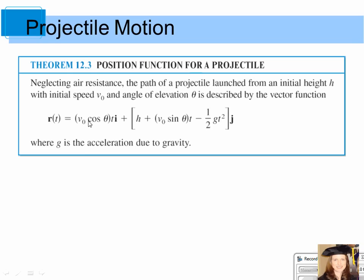R of t equals v sub 0 cosine theta times t times i, plus h plus v sub 0 sine theta times t minus one-half g t squared, times j. Here g is the acceleration due to gravity — 32 if height is in feet, or 9.8 if height is in meters.